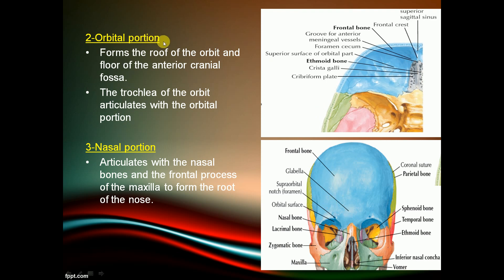The orbital portion forms the roof of the orbit and the floor of the anterior cranial fossa. The trochlea of the orbit articulates with the orbital portion. The nasal portion articulates with the nasal bone and the frontal process of the maxilla to form the root of the nose.